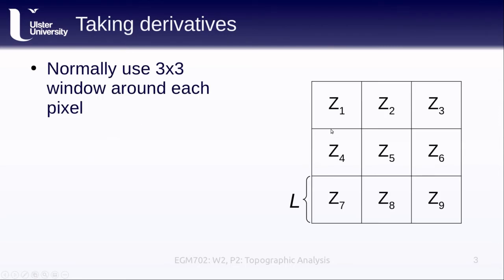Normally we use a 3 by 3 window around each pixel. This is how it's normally done in most of the software packages that you'll encounter. This is not necessarily a universal way of doing it, so make sure that you're double checking what each software package is doing.